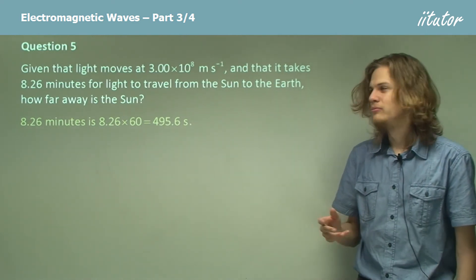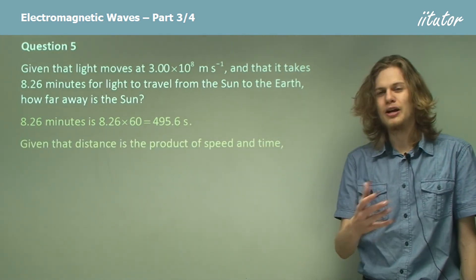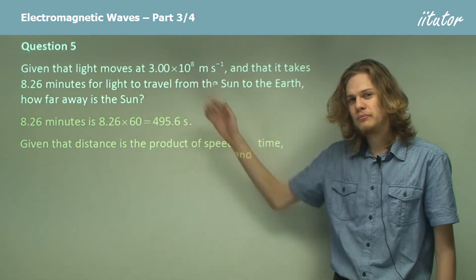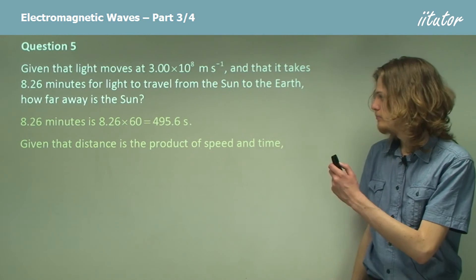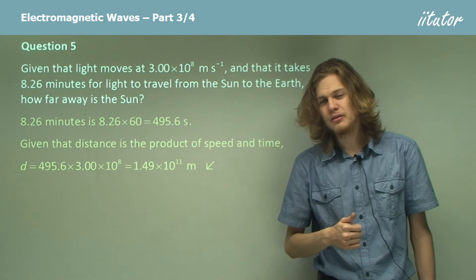And what now? Well, of course, all we need to do is remember that distance is speed times time. So we've got time, we've got speed, and multiplying them together, we end up at an answer of 1.49 times 10 to the 11 metres.